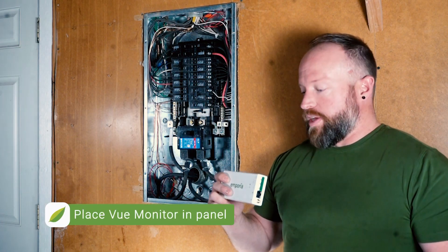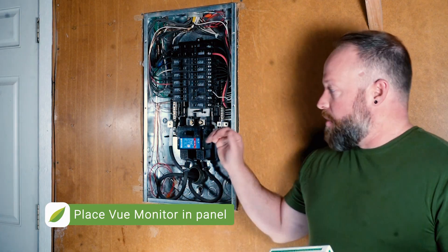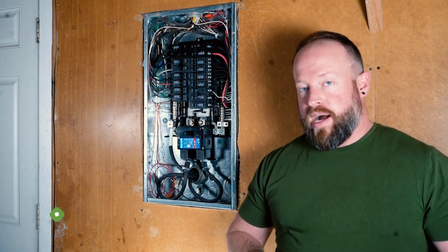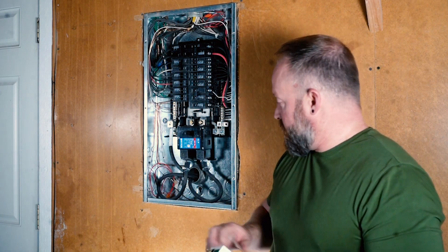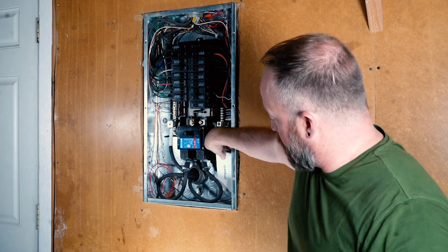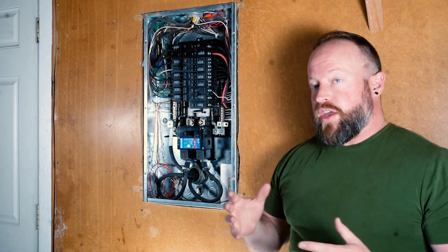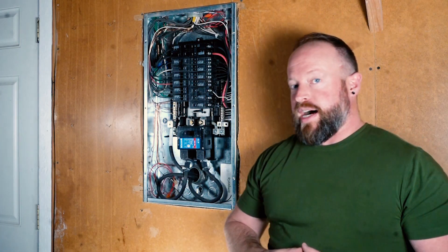The next step is to place the Emporia View monitor in the panel box. In this case, there's a lot of room in the bottom right, so that's where I'll be placing it in this panel box, but it can go anywhere that it fits in the box.